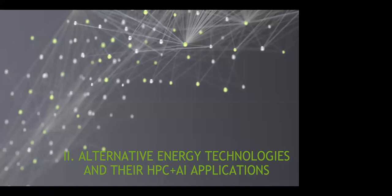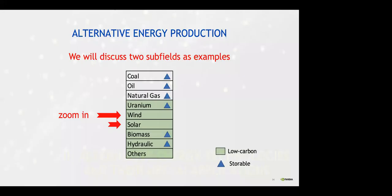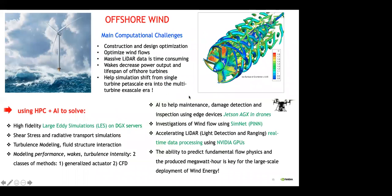In summary, decarbonization is inevitable and goes through all these low carbon technologies. Now we will discuss how AI and HPC can play a role to accelerate this transformation. In the coming slides, I will select only a few examples of low carbon technologies due to lack of time. In production, I will first discuss wind and then briefly go over solar.